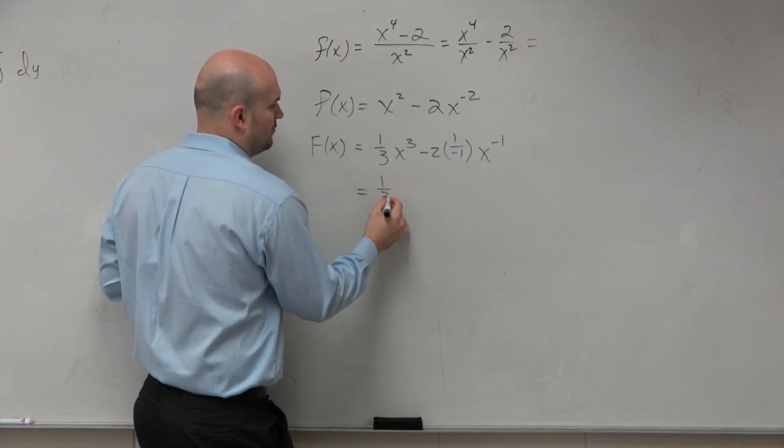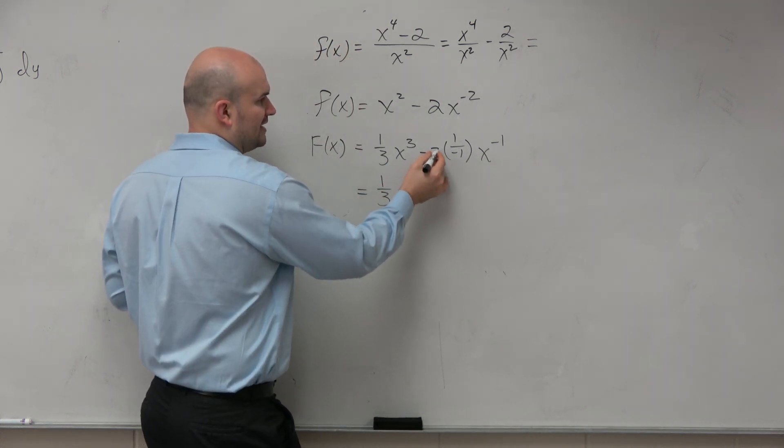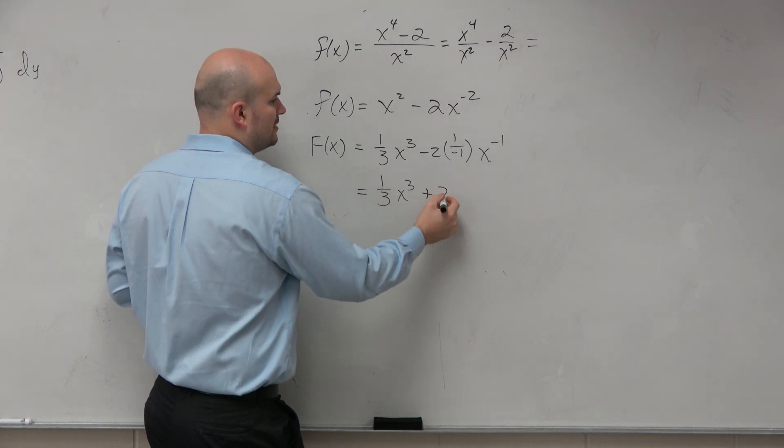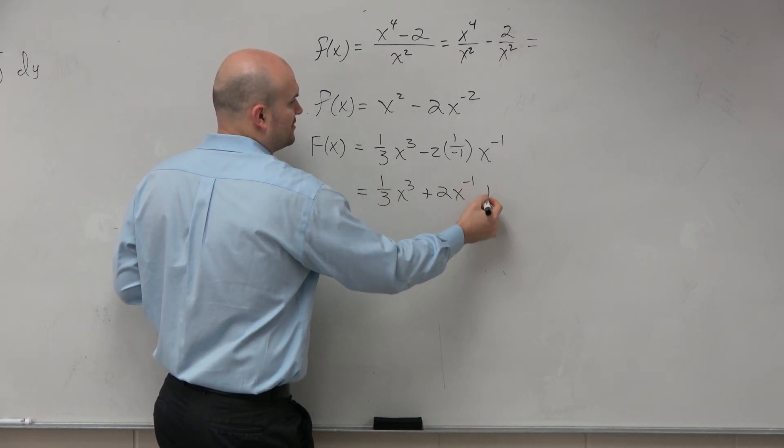Go ahead and simplify this. I get 1 third x cubed. Negative 2 times negative 1 is going to be a positive 2. And then you could write that as x to negative 1 plus c.